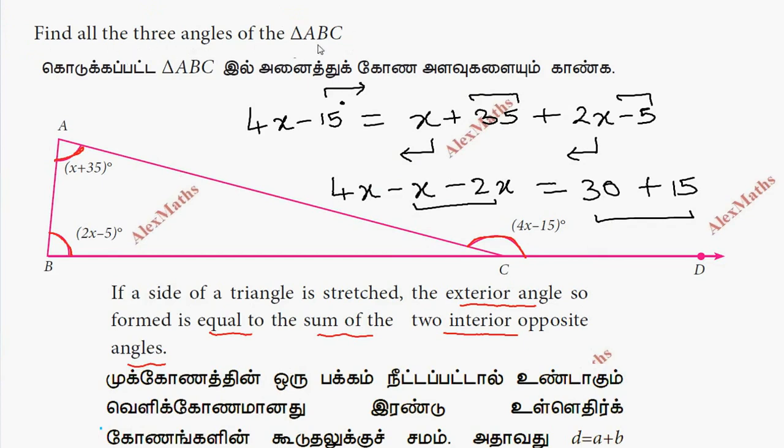To find all three angles of the triangle ABC, we need angle C. The angles form a linear pair, so we subtract from 180 degrees.